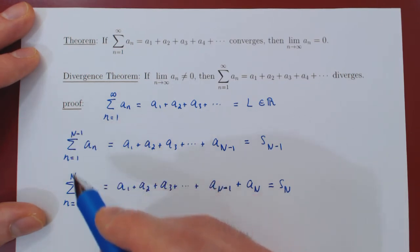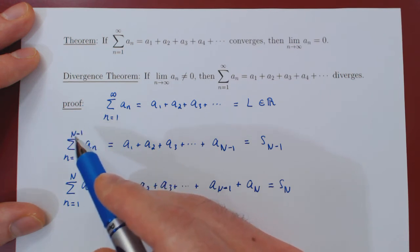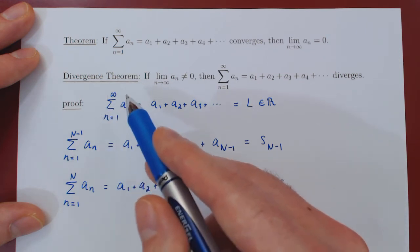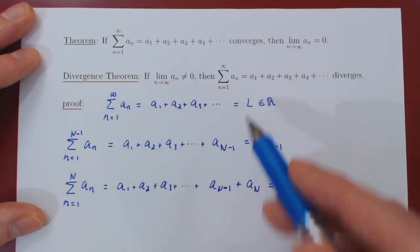Now in both cases, if we let n tend to infinity, and n tend to infinity, n minus 1 will also tend to infinity. So in both cases, these will converge to the infinite series,